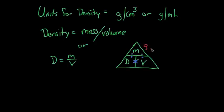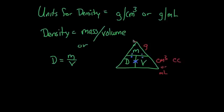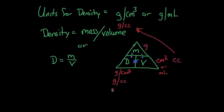Remember, mass is measured in grams. Volume can be measured in cubic centimeters or milliliters. Be careful because sometimes cubic centimeters is written as cc. So the units for density could be grams per cubic centimeter or grams per milliliter. We'll write it both ways.